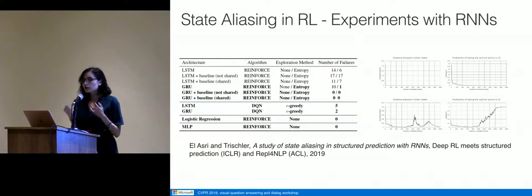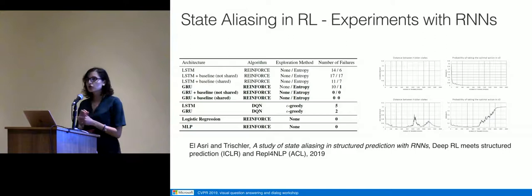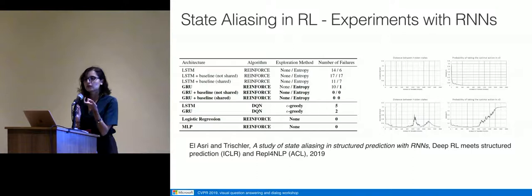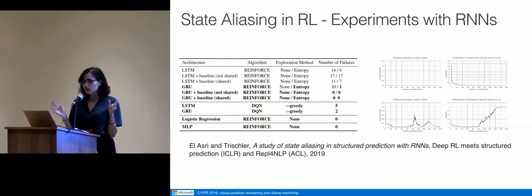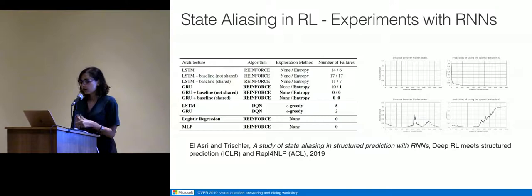That confirmed RNNs trained with policy gradient methods are subject to state aliasing. To confirm it was due to x1 and x2 sharing the same optimal action, we ran another experiment where we inverted the rewards for x1 so the optimal action was no longer the same. The number of failures dropped to between zero and four out of 50 runs for LSTM and GRU without any exploration or tricks — confirming our hypothesis.